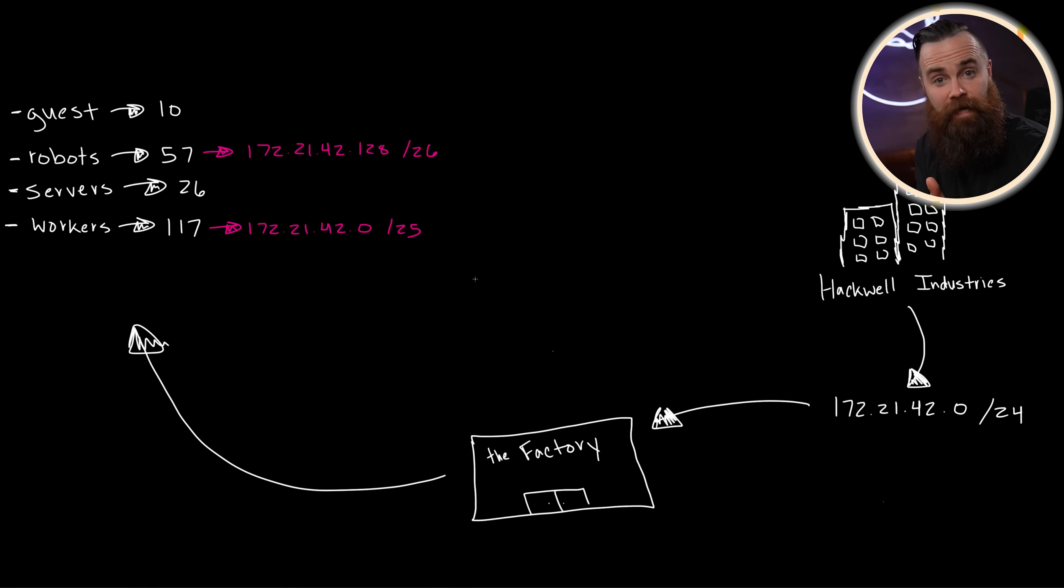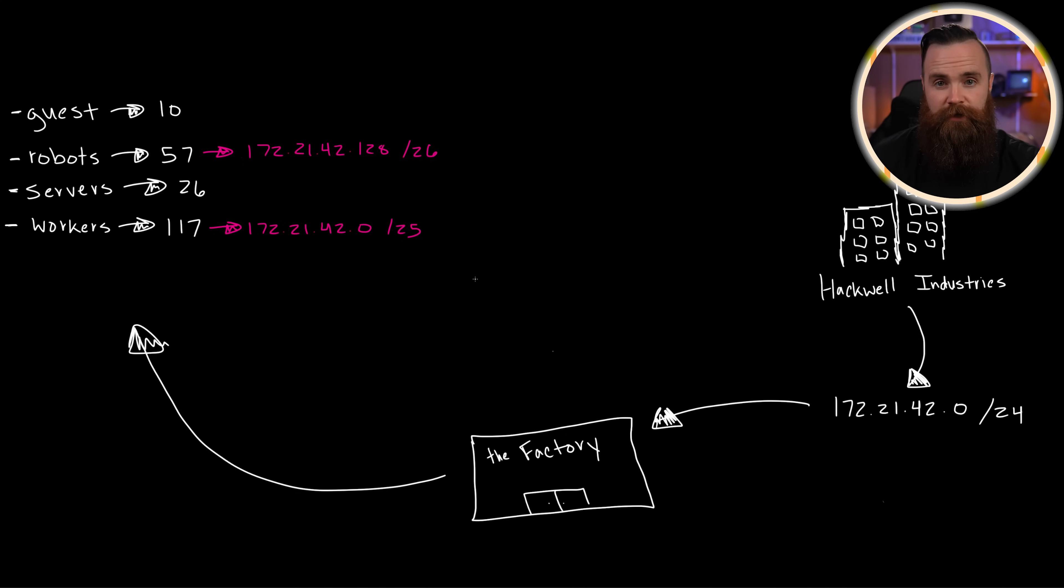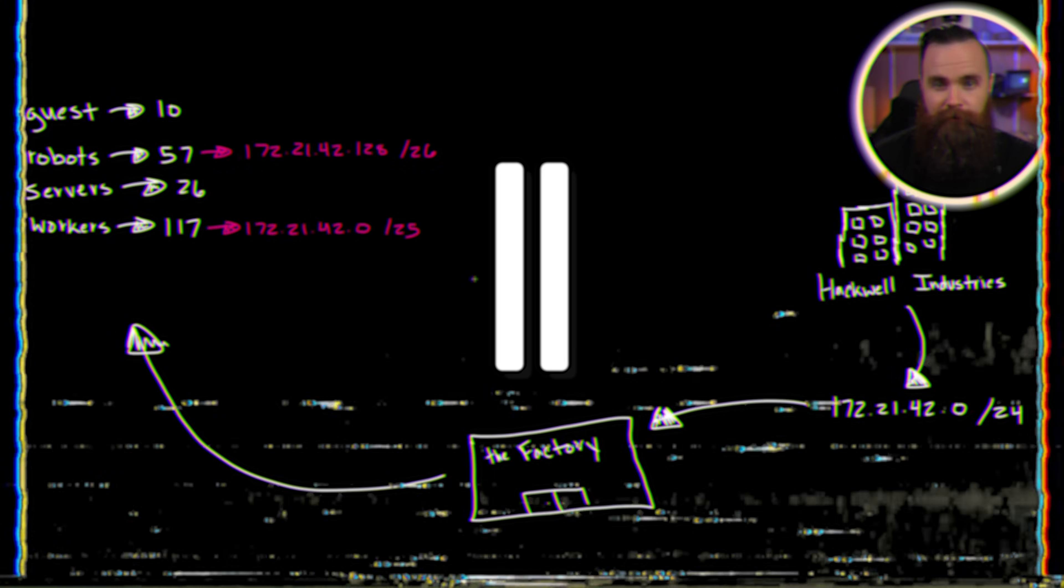Now at this point, I hope you're seeing how it's coming together. It's weird, but we're just starting from biggest to smallest, and we're just subnetting each network in order based on the host requirements. Go and do the rest yourself. Do our guest and server networks. Pause the video.